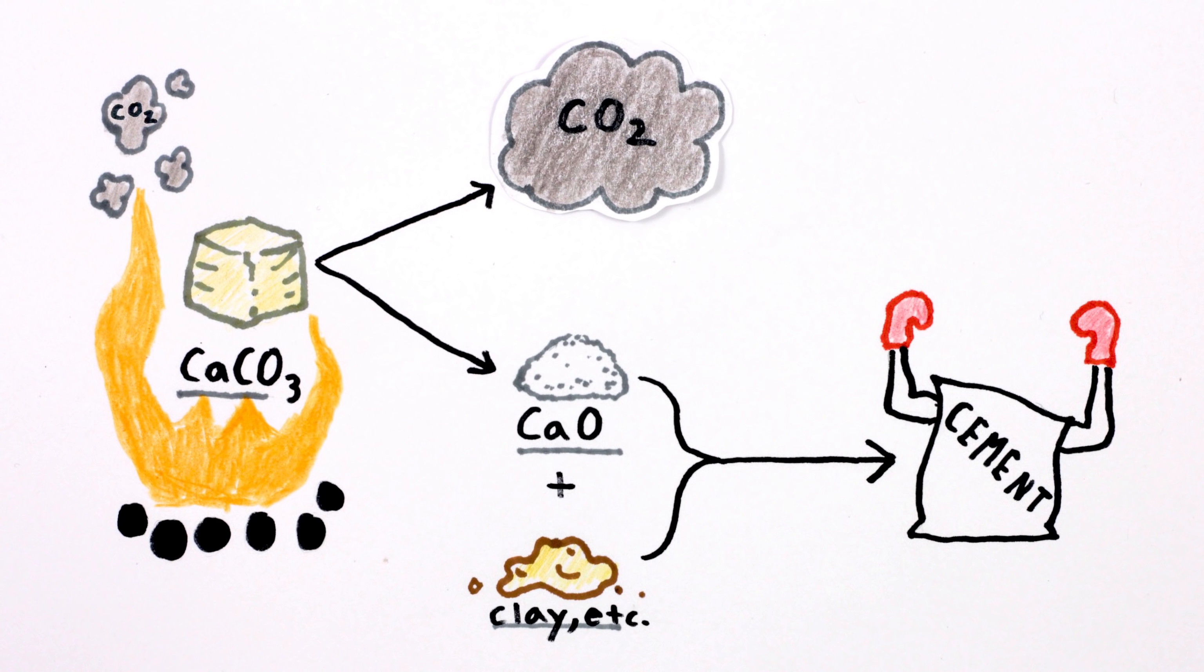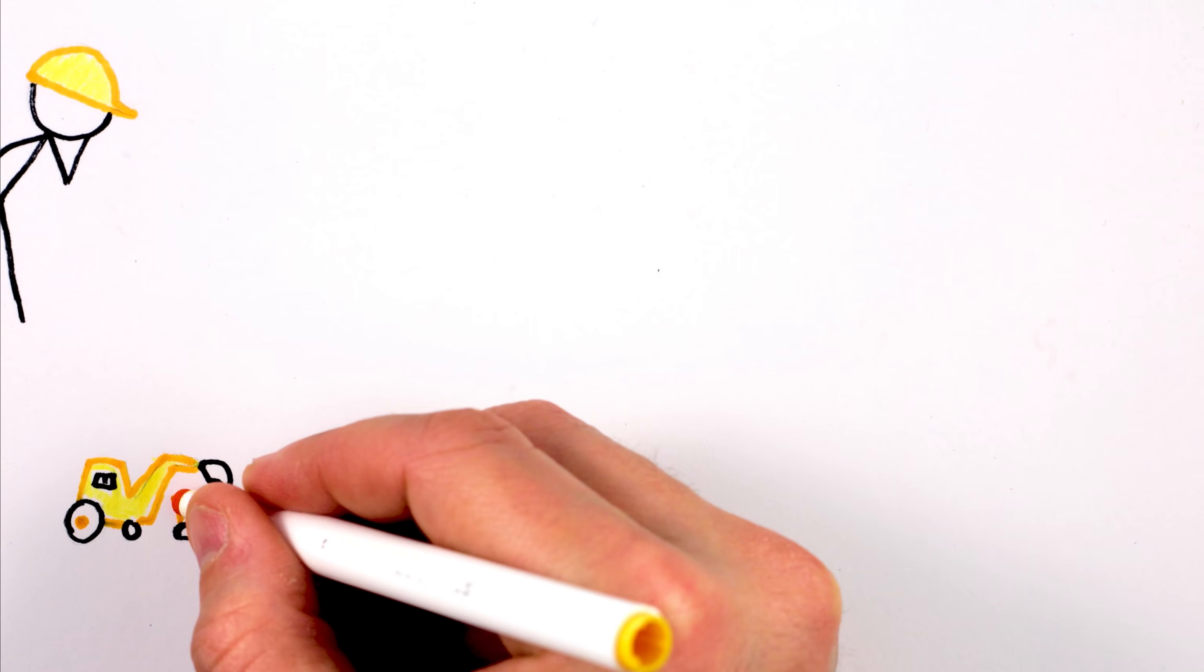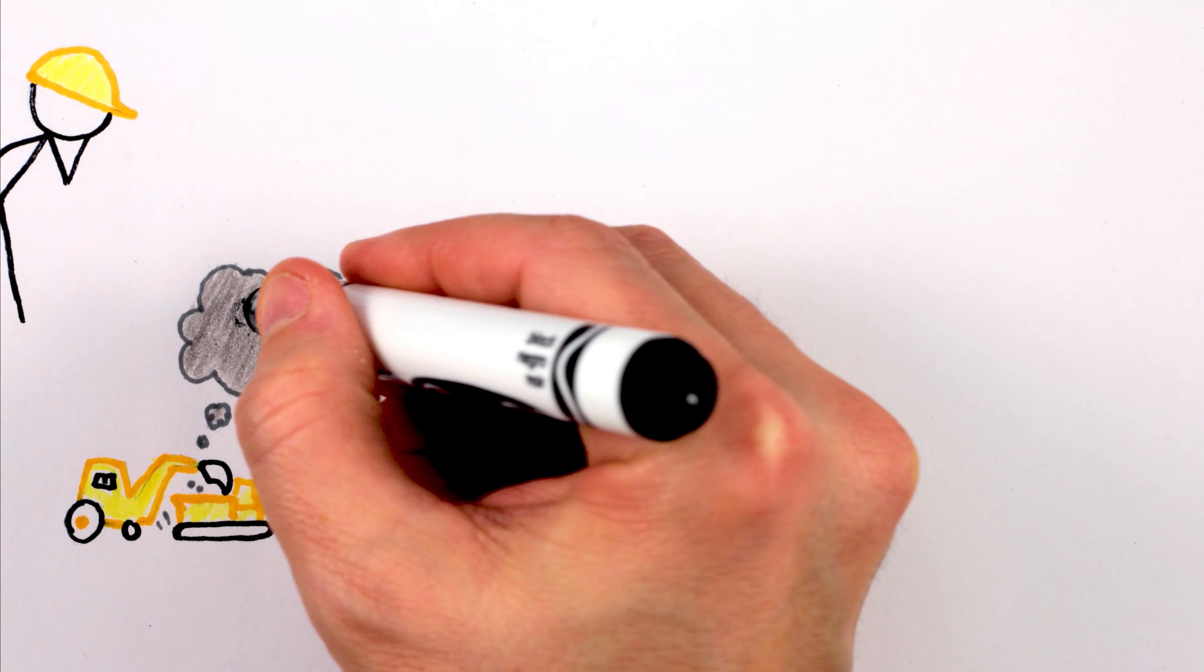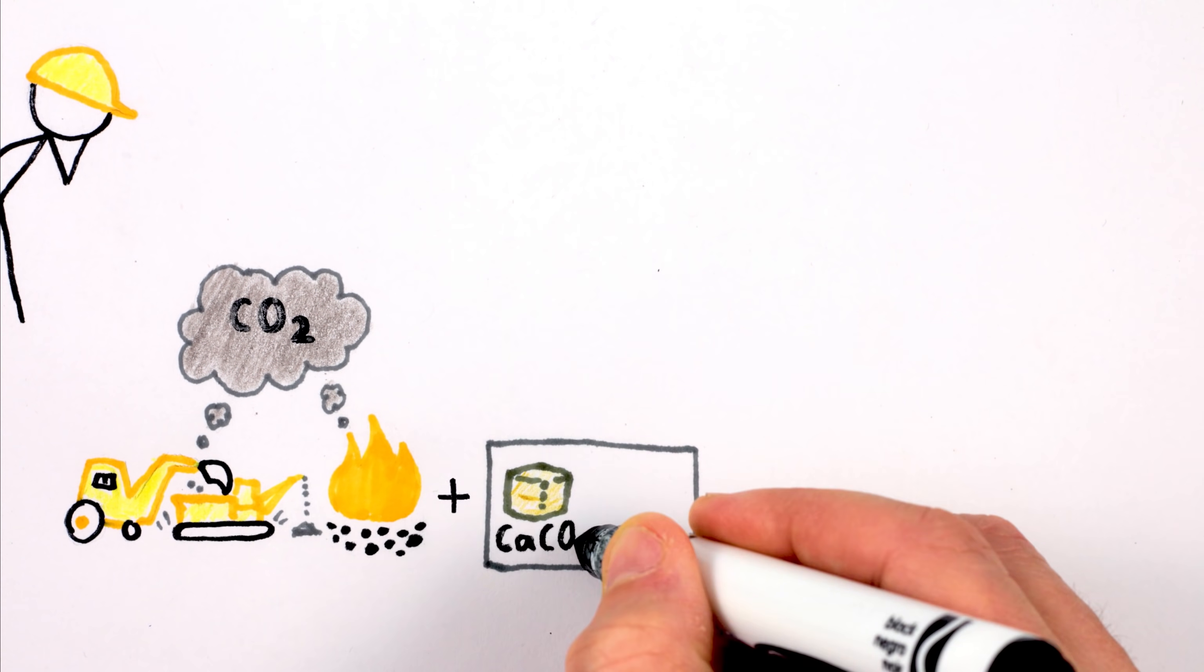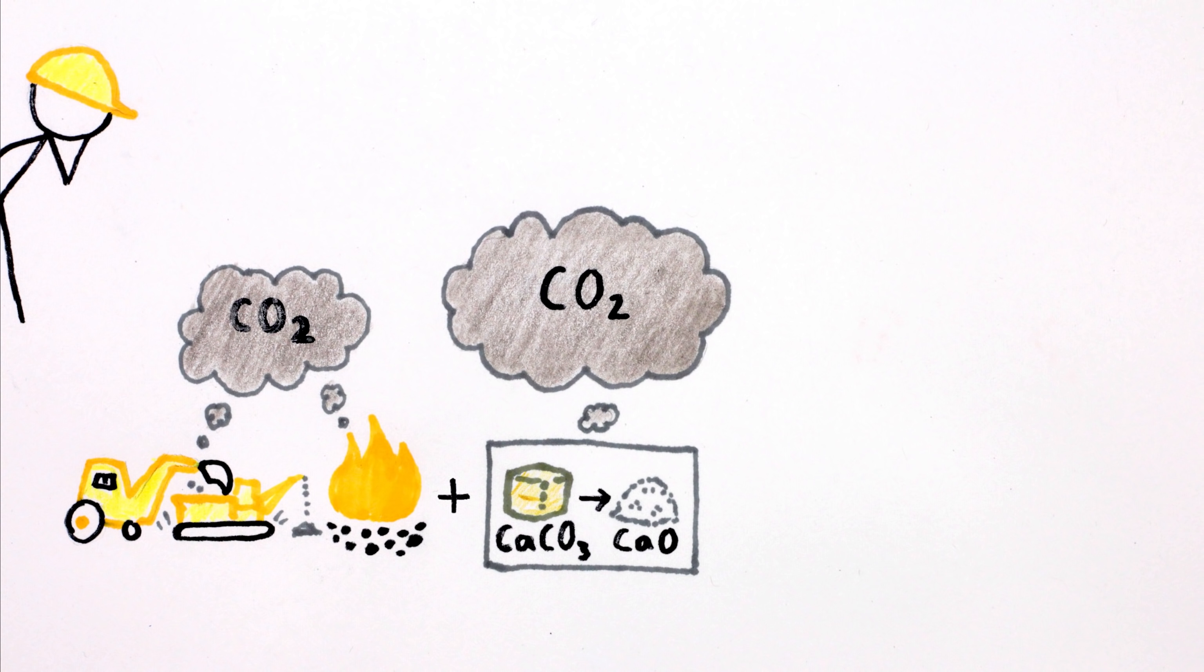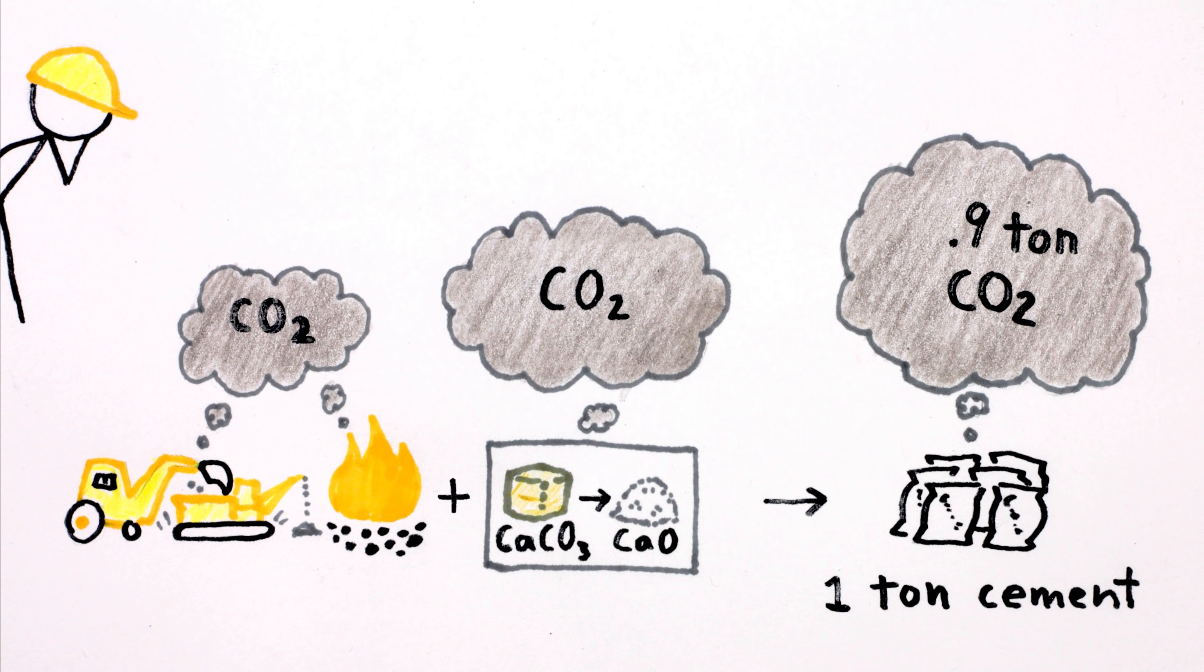In most industrial processes, the energy used to run machines and heat stuff up is the overwhelming source of carbon dioxide. But with cement, when the limestone itself breaks down, it releases even more CO2 than all the other parts put together. All told, for every ton of cement we make, almost a ton of CO2 gets released.